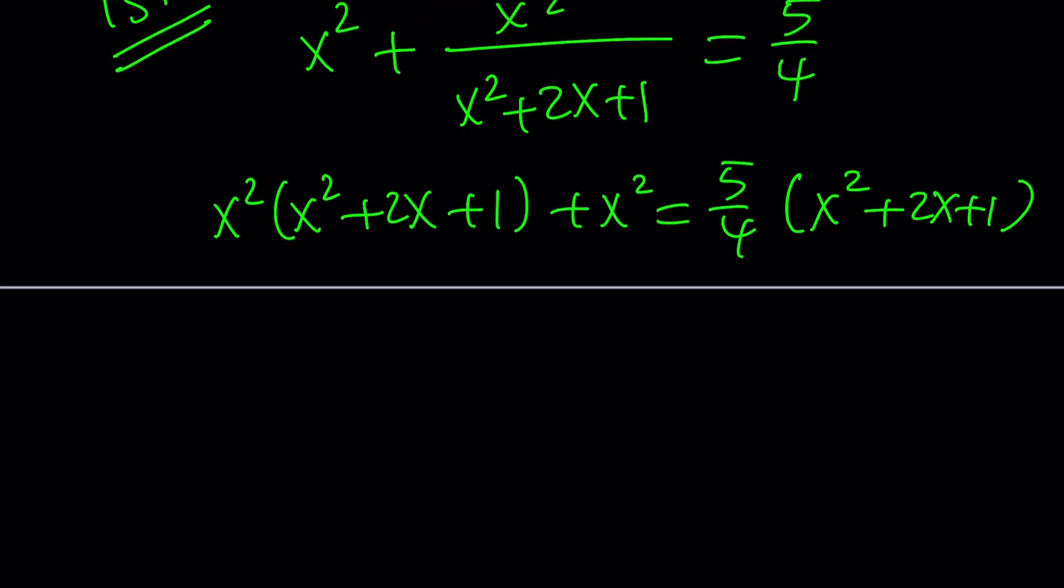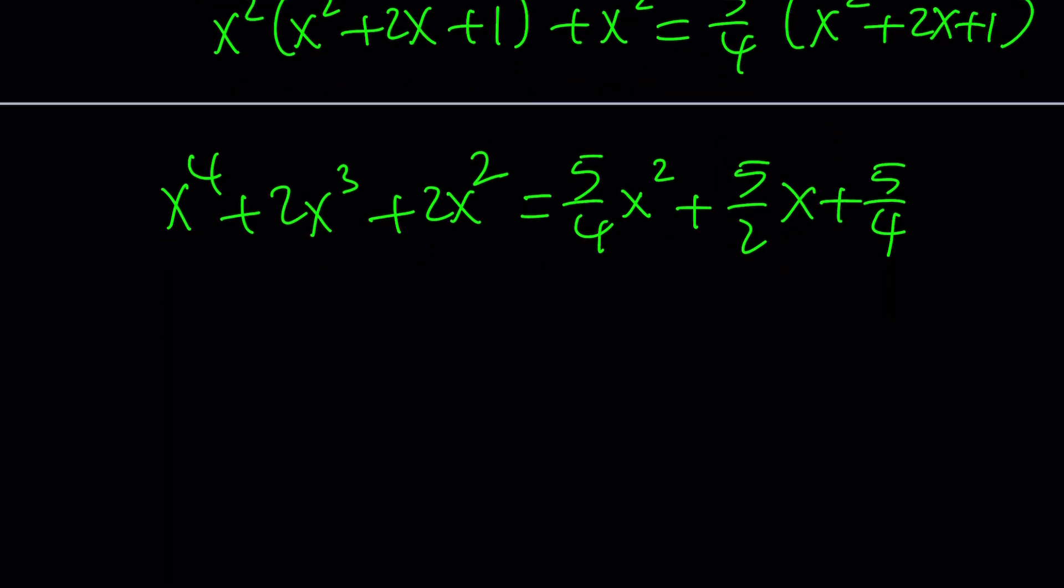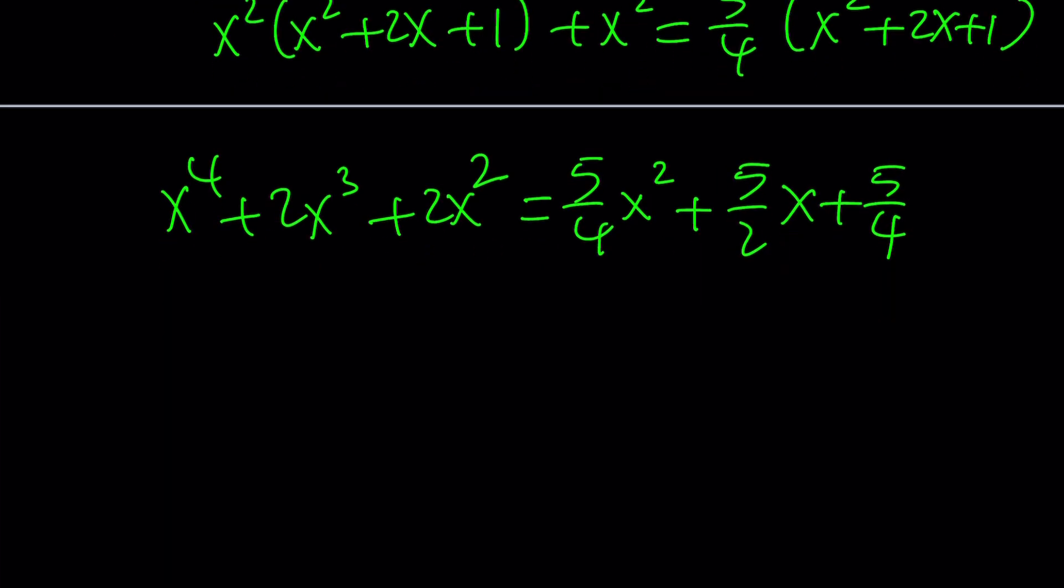Let's go ahead and distribute everything. We get x to the 4th plus 2x cubed plus x squared plus x squared, which gives me 2x squared. And on the right hand side, I'm getting 5 over 4 x squared plus 5 over 4 times 2x, which is 5 halves of x, plus 5 fourths. And then obviously you can multiply everything by 4, which is going to make things a little easier. I don't really want to multiply or make a common denominator here. So let's just multiply everything by 4 to get rid of the fractions.